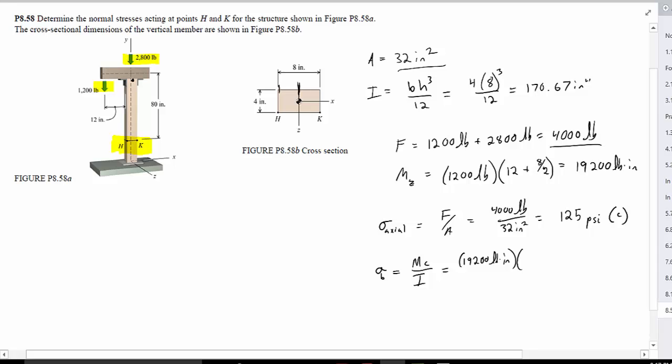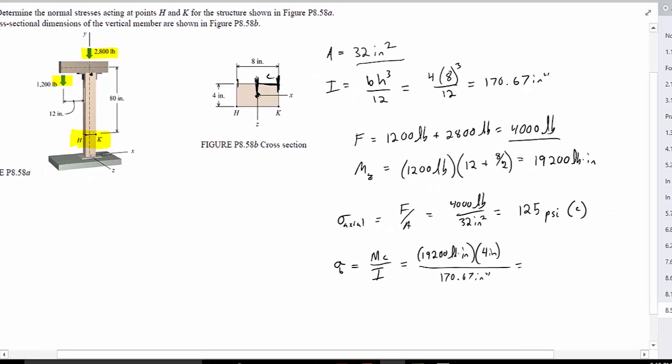Well c is going to be from the neutral axis to the farthest point out, that's our c. So that will be 4 inches divided by our moment of inertia, which is 170.67 inches to the fourth, and this will equal 450 psi.